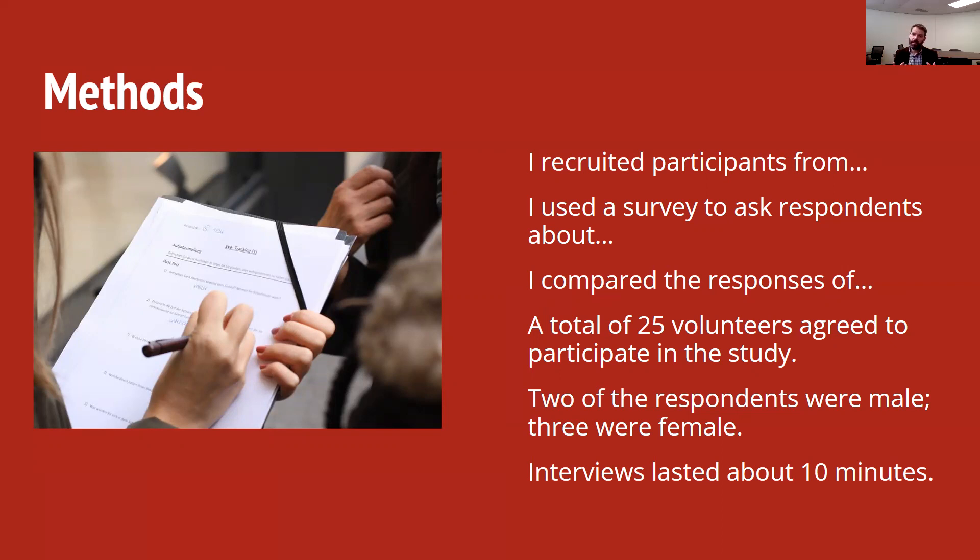In that section, you're probably going to want to describe who you interviewed or surveyed, where you did it, how long it took, and describe details about the people. You might see sentences like, 'A total of 25 volunteers agreed to participate in the study. Two of the respondents were male, three were female. Interviews lasted about 10 minutes.' So all of these are in past tense. That's what we often see in the methods section.